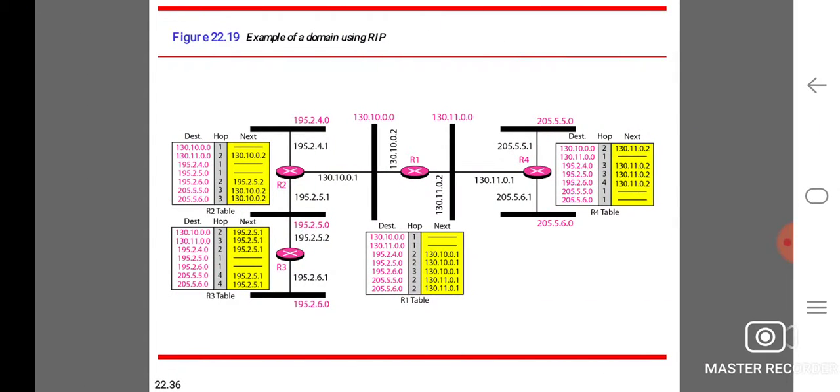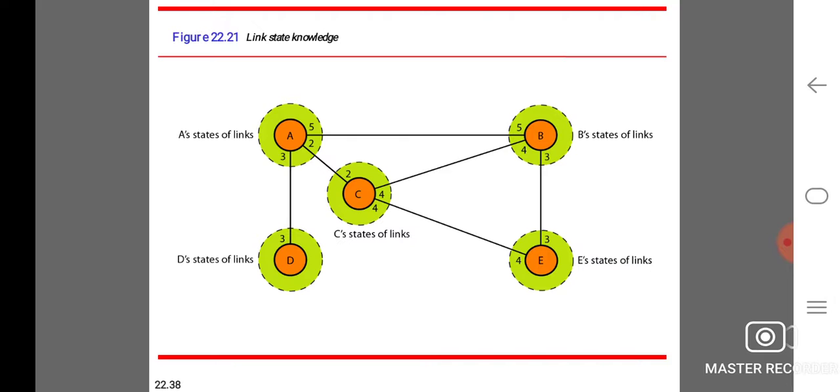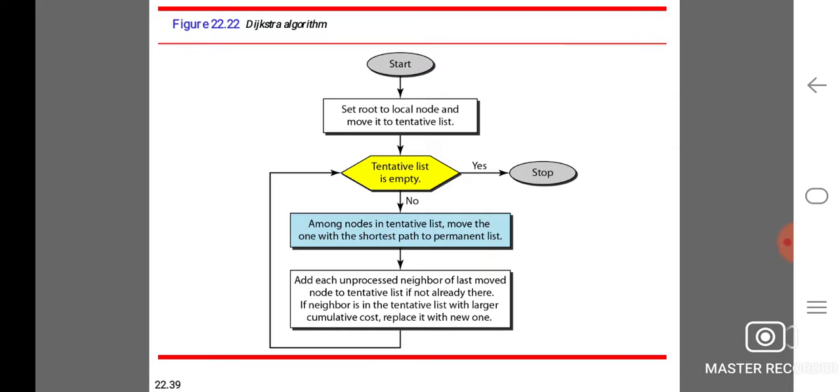This is the concept of link state routing. In link state routing, node A has knowledge of states of its links, B has states of its links, and C, D, E have states of links that are linked with the particular path.